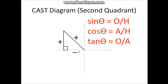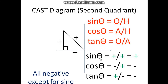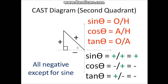For the second quadrant, the x values here are negative. The hypotenuse is always positive because it is a length of a line. But this part is negative because it's to the left of the x-axis in the second quadrant. It's still positive for the y-axis because it's still above the x-axis. So the adjacent line value here is negative. Cosine theta and tangent theta are therefore negative, and only sine theta is positive in this quadrant — meaning the angle is between 90 degrees and 180 degrees.